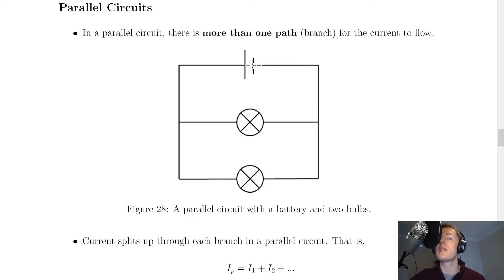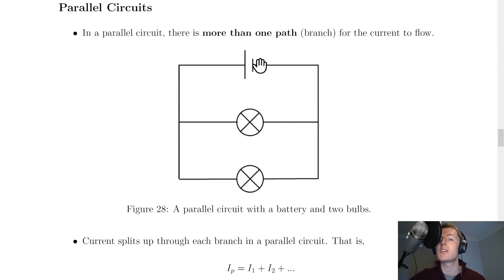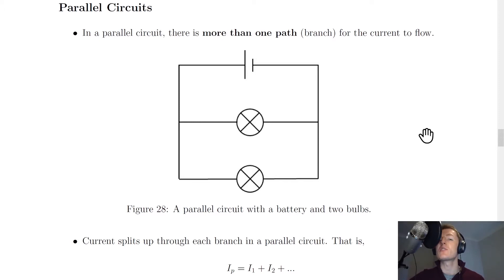The current is going to flow from the negative terminal of the battery to the positive terminal, so it's going to flow this way and down here. When it reaches this point, the current is then going to split up — through this bulb here and keep going until it gets back to the battery, but also down to the bottom of the circuit, through this bulb, and then back up to the battery. And just like for series circuits, we have two important rules for parallel circuits, looking at what happens to the current and the voltage in a parallel circuit.